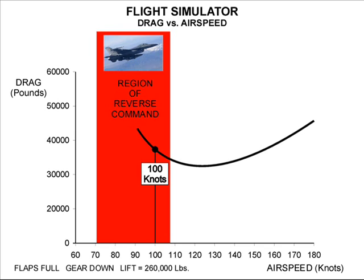When landing on normal runways at higher airspeeds, some jet fighters may be operating in the region of neutral command, as shown in Demonstration Number 2. The reverse command region is the area where drag decreases with increasing airspeed. This simulation utilizes a precision jet transport simulator flying at 100 knots in the landing configuration. At this airspeed, the jet transport exhibits characteristics similar to a jet fighter flying at its normal carrier approach airspeed. The corrections made during the demonstrations are approximately three times the normal values in order to clearly show differences in the methods being examined.